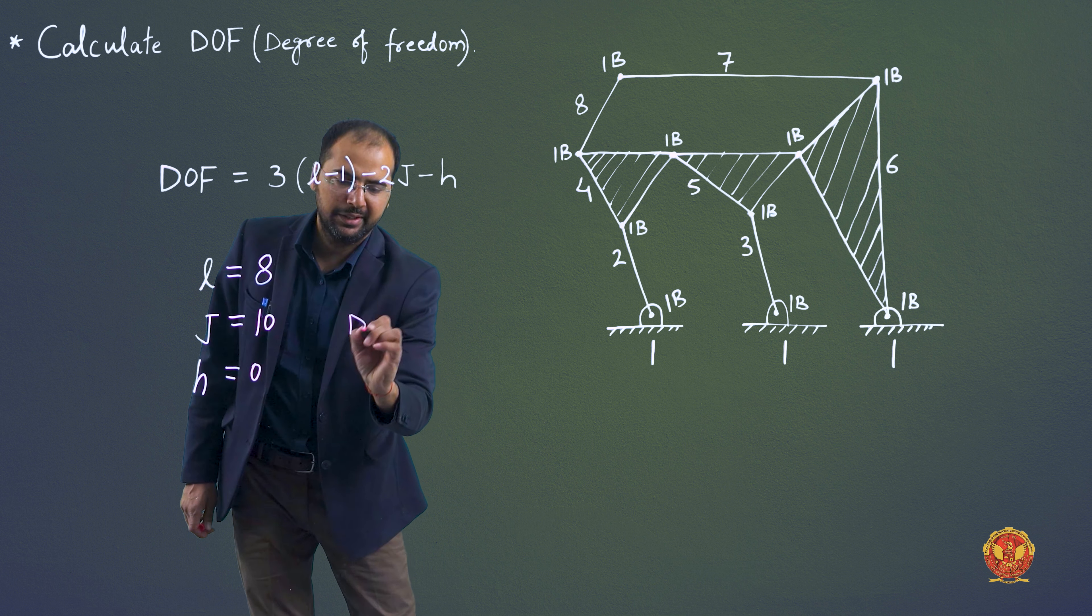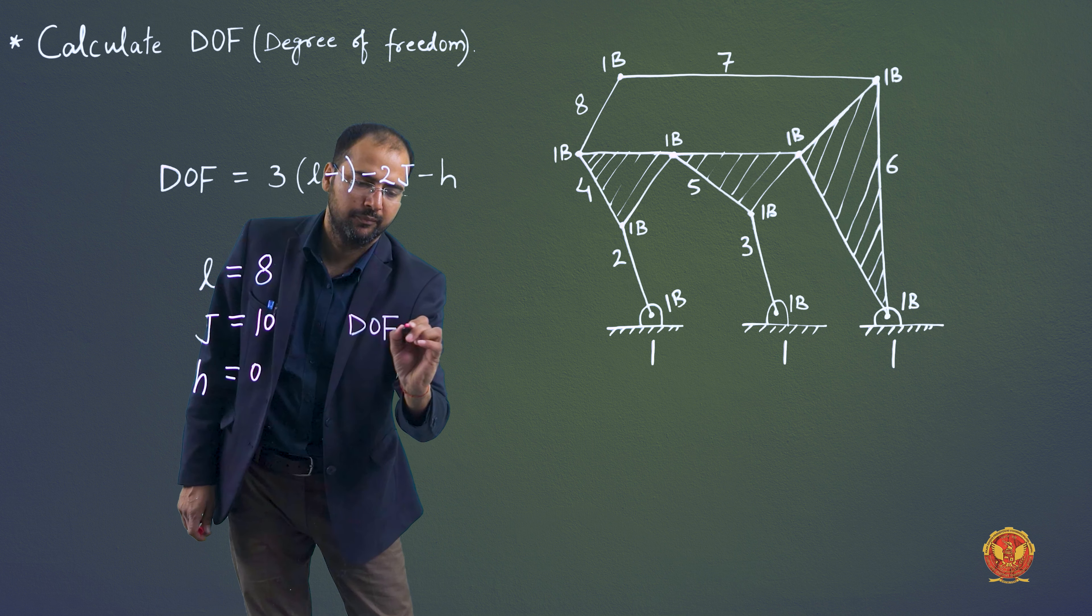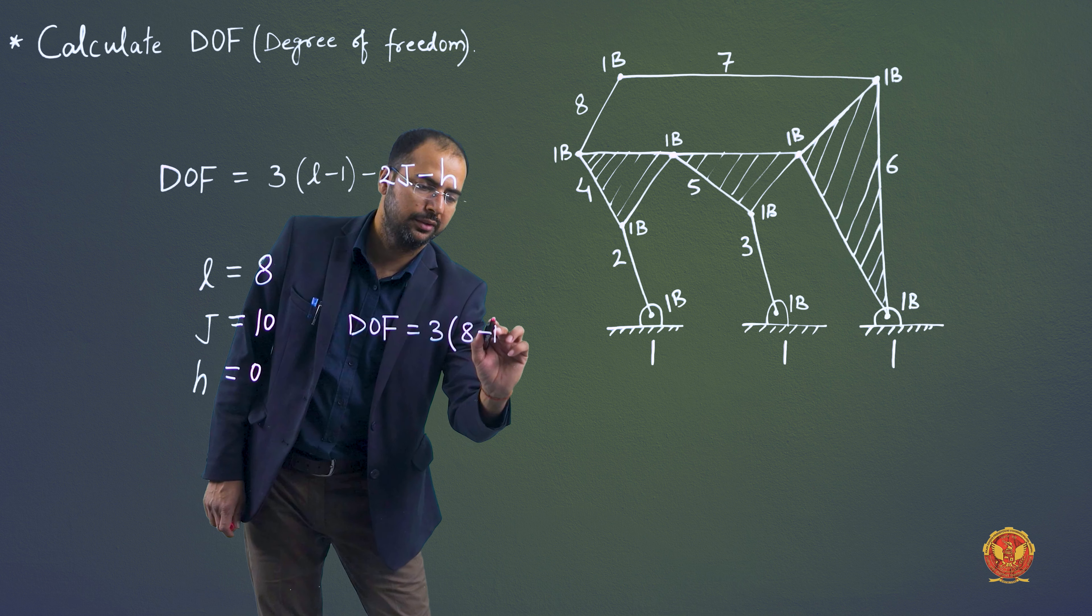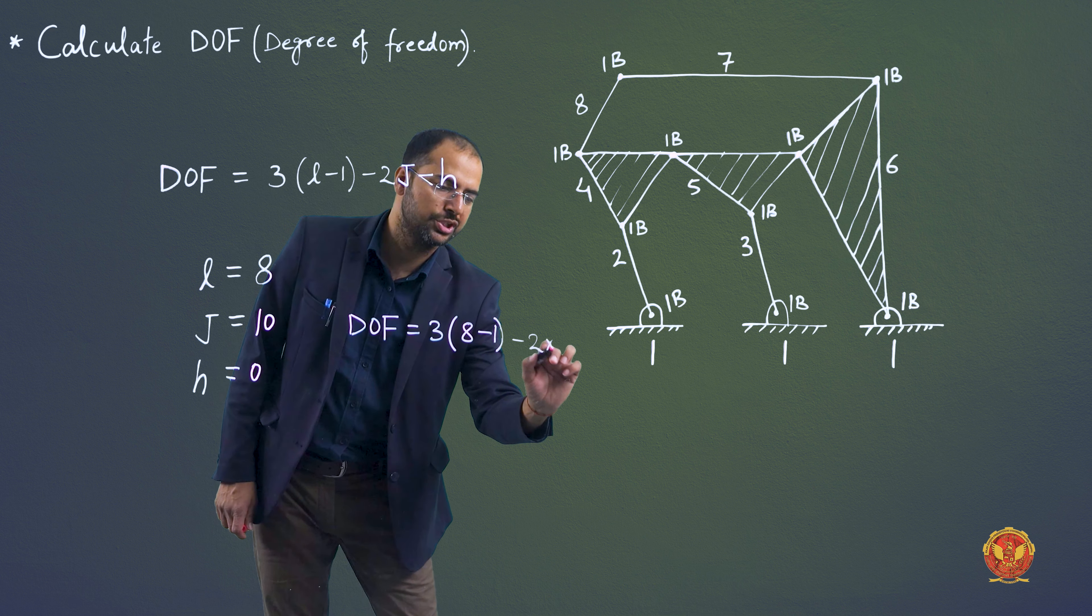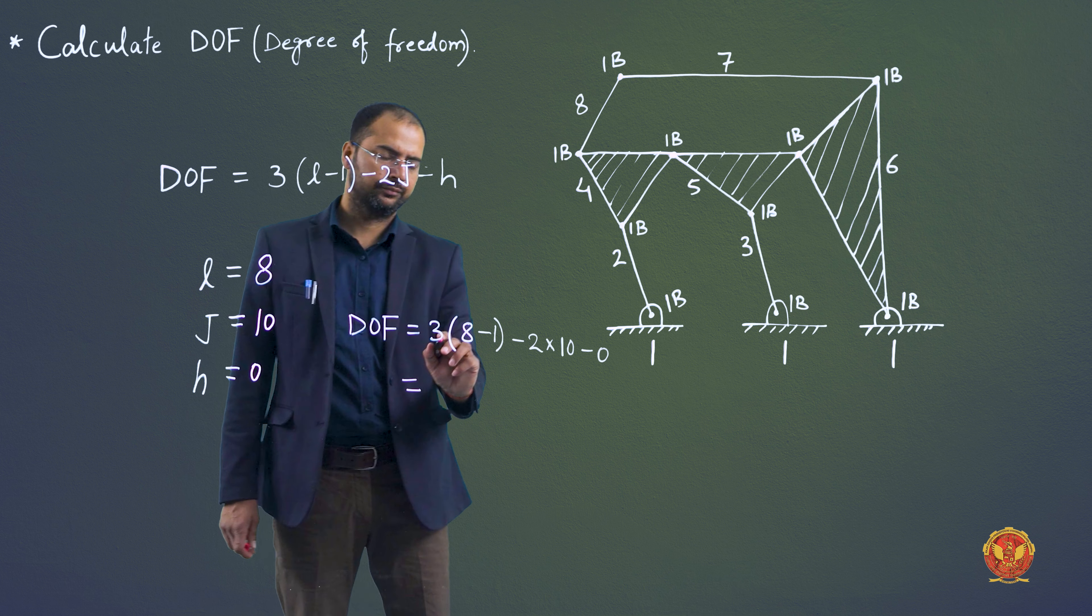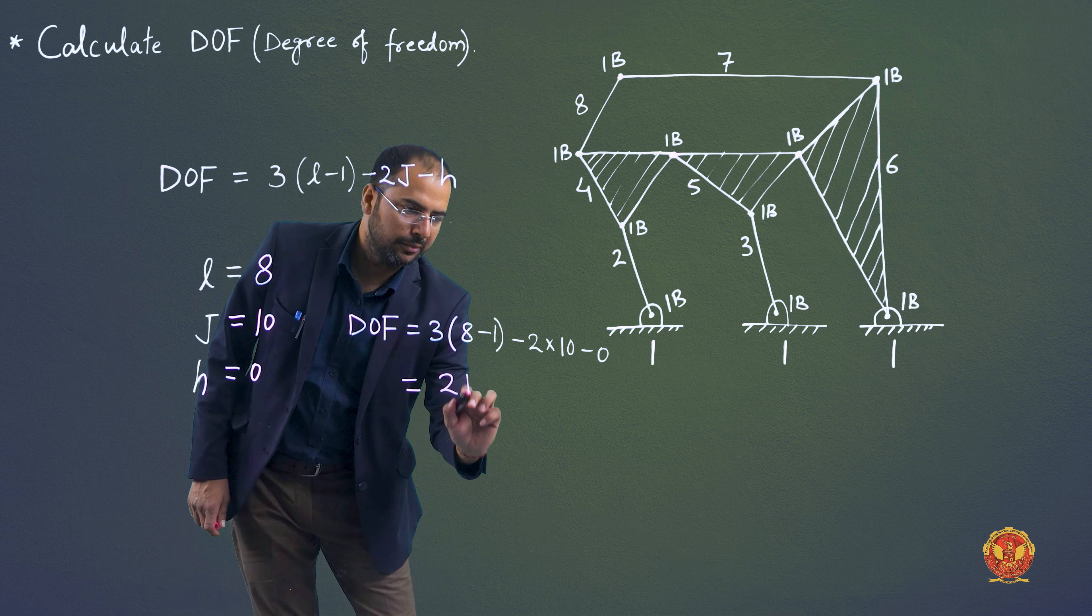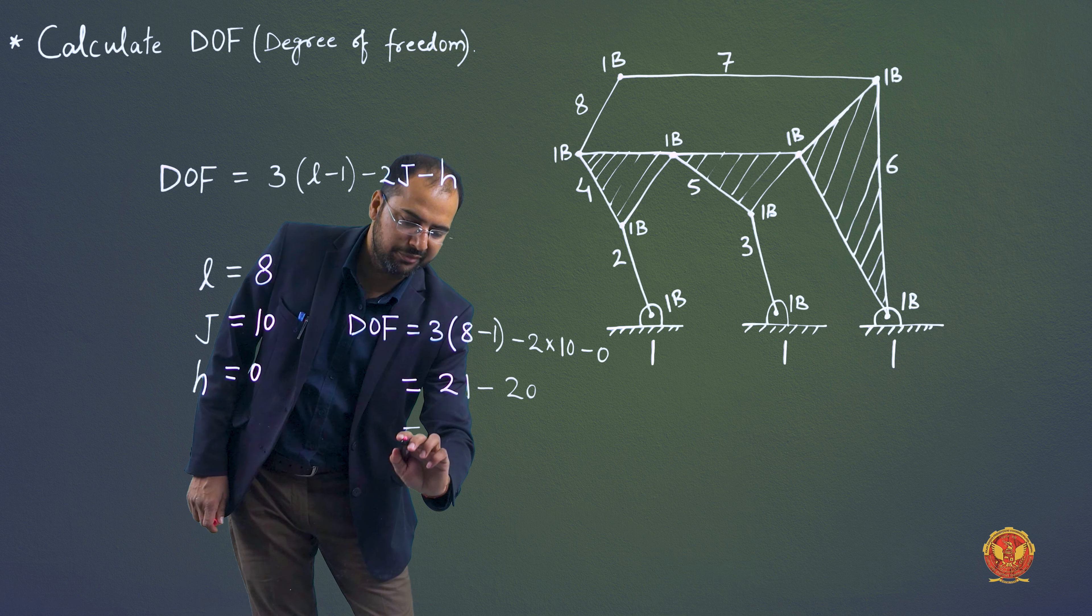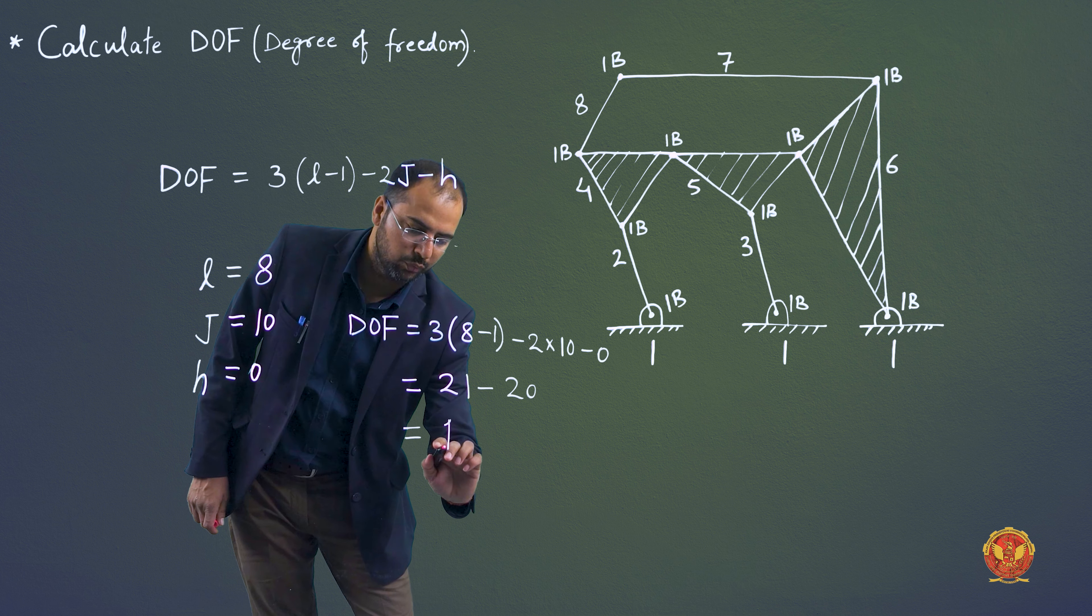In this case, degree of freedom will be 3 into l minus 1, that is 8 minus 1, minus 2 into j, that is 10, minus 0 for the number of higher pairs. 7 into 3 is 21 minus 2 into 10 is 20. So here we are getting degree of freedom as 1.